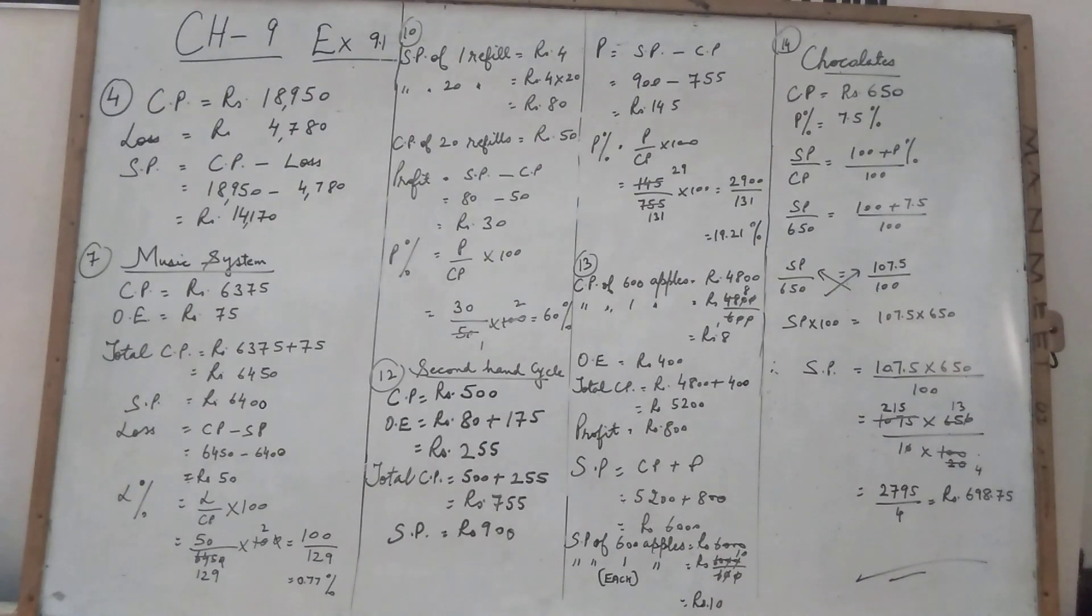Put the values, do the cutting. Here cutting is not possible. Divide these two. You will get the answer 0.77%. Next one, the 8th and 9th are same. Turn the page, see the 10th question. Dilpreet bought 20 refills and sold them at Rs. 4 each. If the cost of all the refills was Rs. 50, what was his profit or loss percent?